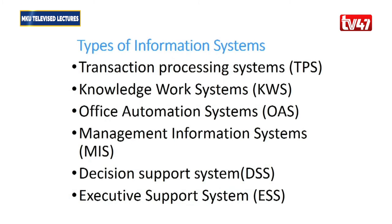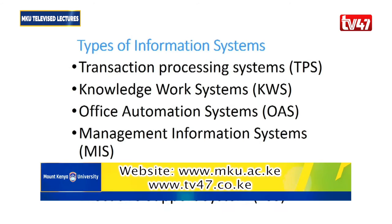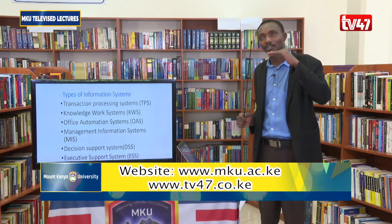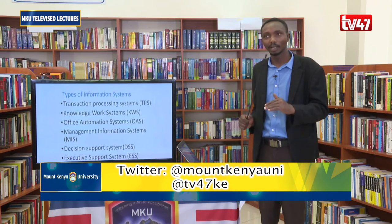Let's look at types of information systems. We have six of them: transaction processing systems, knowledge work systems, office automation, MIS (management information system), decision support systems, and executive support system. Each of these works or operates within a specific level within the organization — the strategic team at the top, the tactical team in the middle, and the operational team at the lower level.